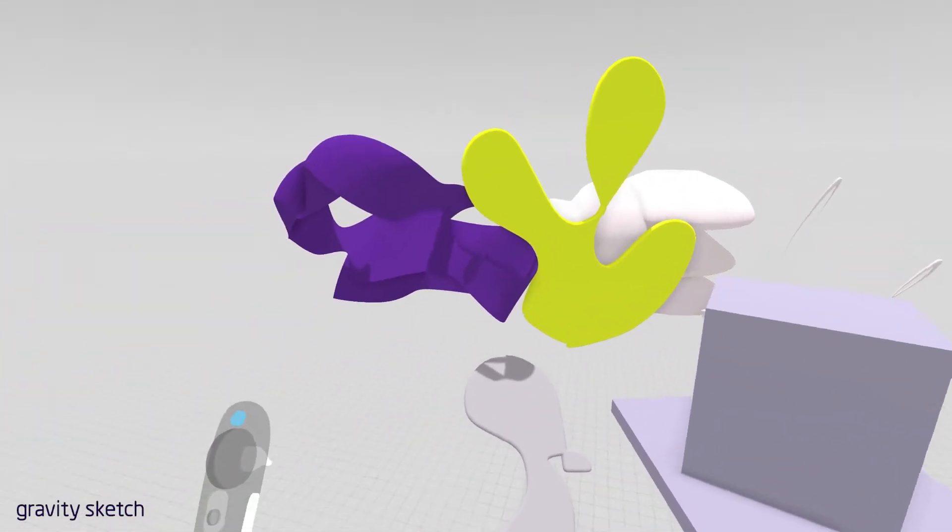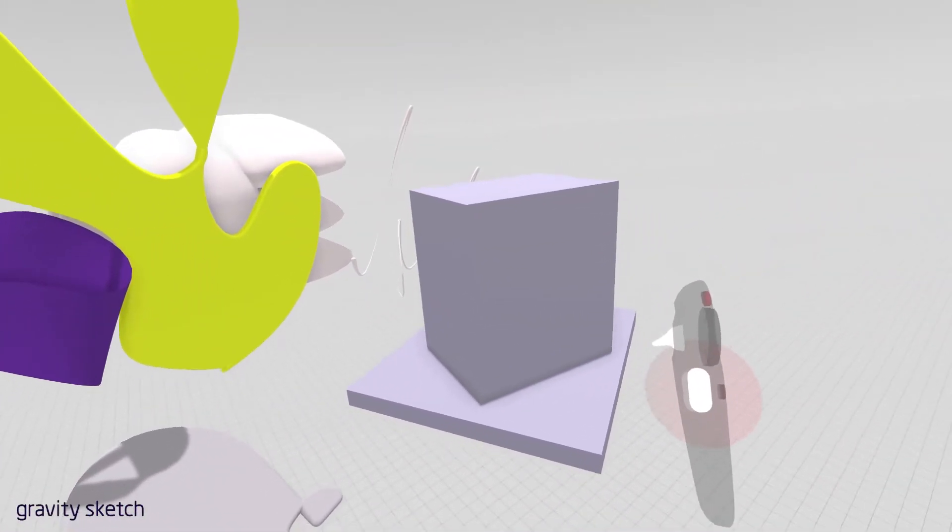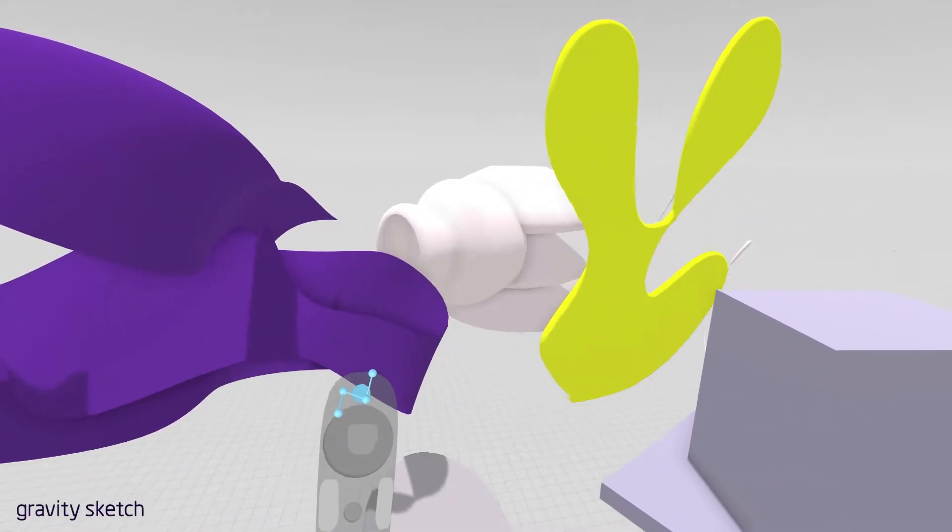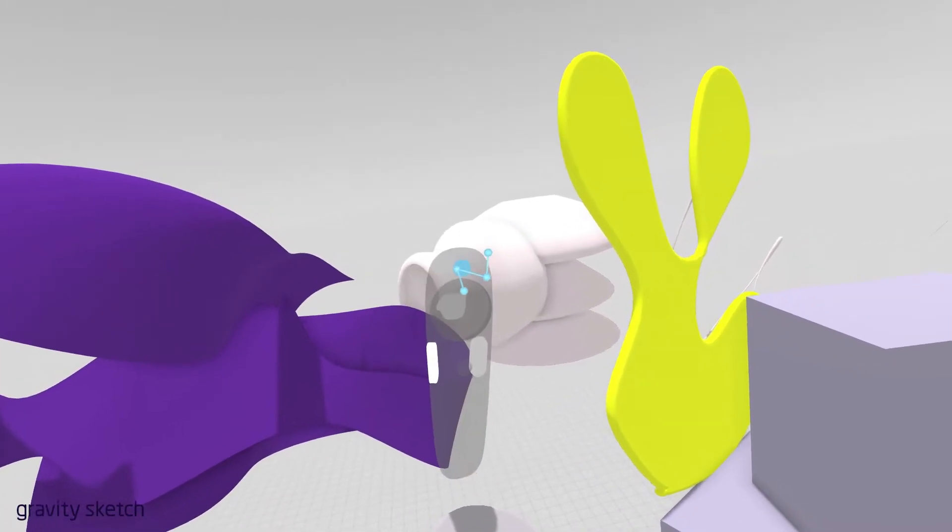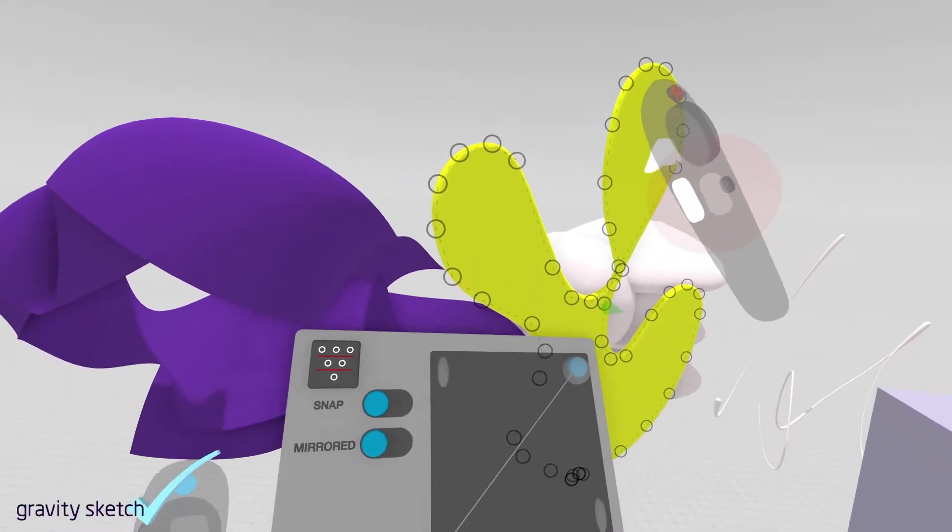So those are the basic tools. Now to edit some of this geometry, if you're not quite content, you can actually grab the geometry. Don't worry about moving because it will snap back into place when you push this blue button. The blue button with the icon above it allows you to access the control points.